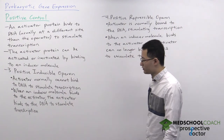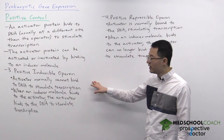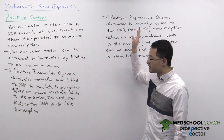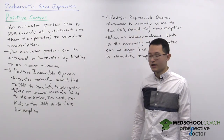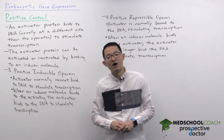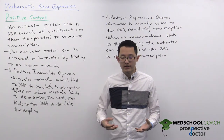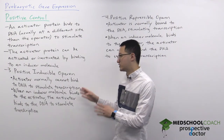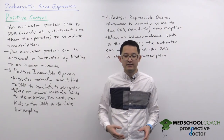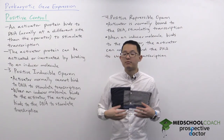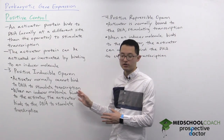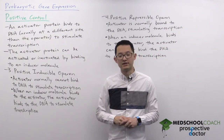There are two types of positive control: positive inducible operons and positive repressible operons. Positive inducible operons are operons whose transcription is normally inactive, but the presence of an inducer molecule can turn on the transcription of this operon.